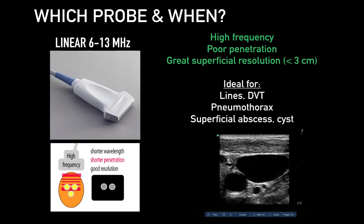So which probe and when? The linear probe is a higher-frequency probe, 6 to 13 MHz — often listed in reverse on the probe as 13, 6. Do not be confused by this. It is a high-frequency, short-wavelength probe and offers great resolution of superficial soft tissue including vessels, pleura, abscess, and cysts.